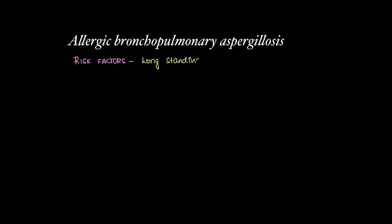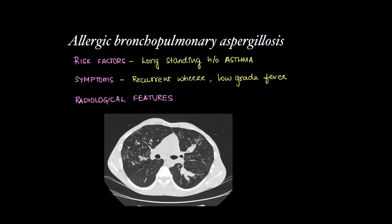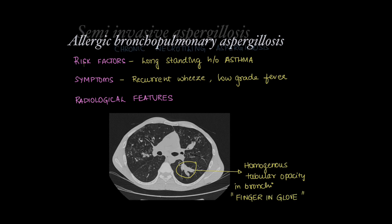Moving on to allergic bronchopulmonary aspergillosis — risk factors include a long-standing history of asthma. Symptoms include recurrent wheeze and low-grade fever. On imaging, fungal and mucoid elements filling the bronchi are seen as homogeneous tubular opacities, more commonly in the upper lobe, known as the finger-in-glove appearance.